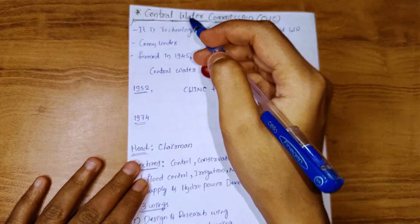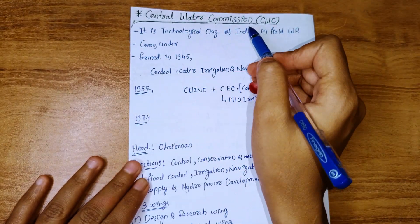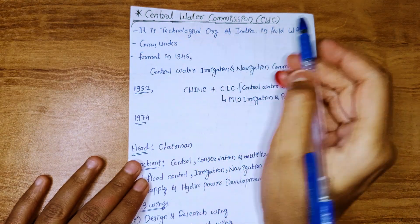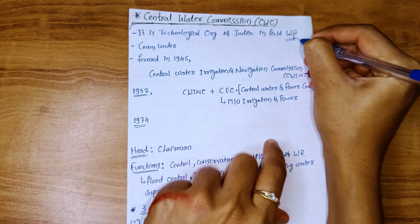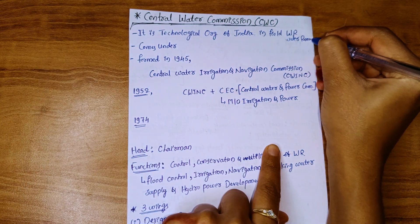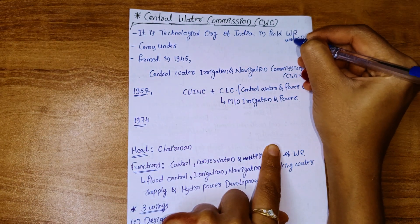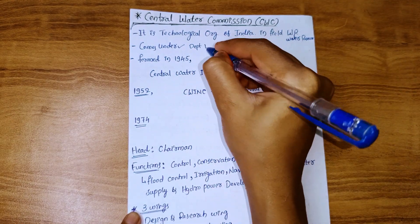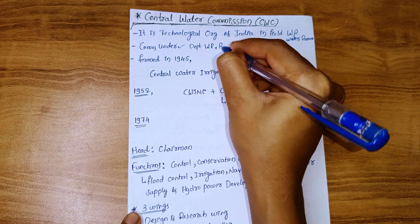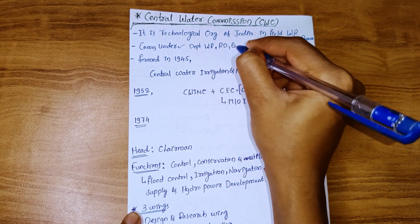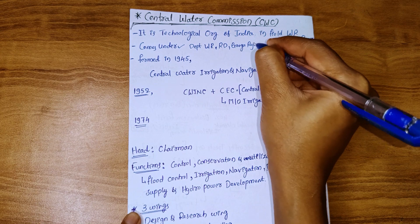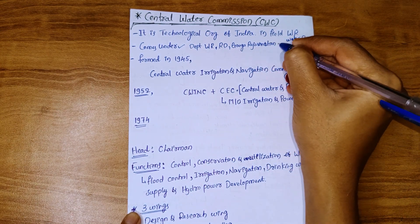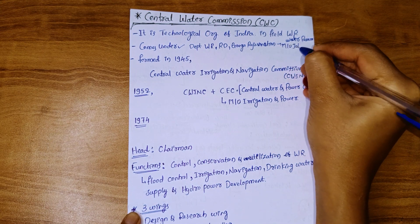Hi guys, today's topic is Central Water Commission (CWC). It is a technical organization of India in the field of water resources. It comes under the Department of Water Resources, River Development and Ganga Rejuvenation, which is under the Ministry of Jal Shakti.